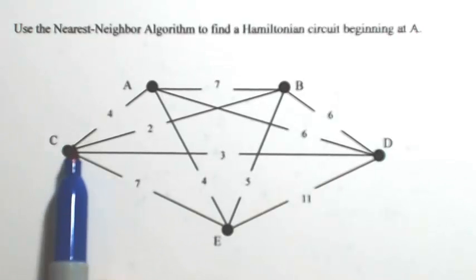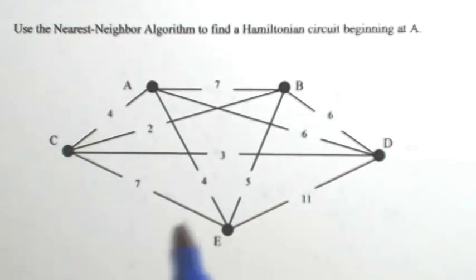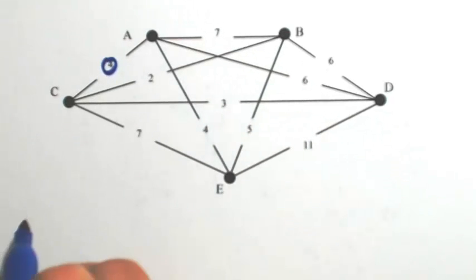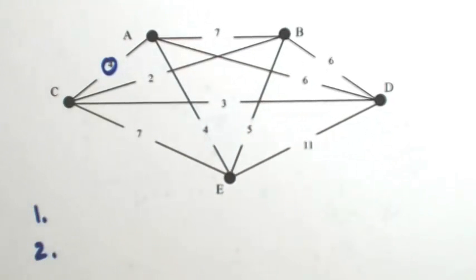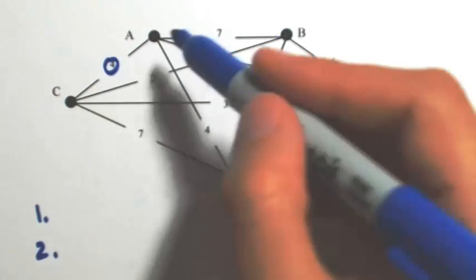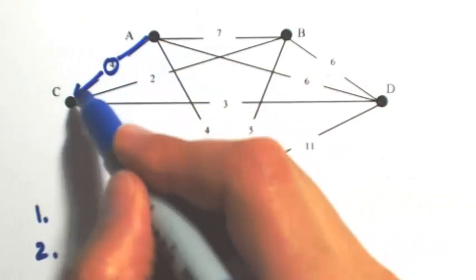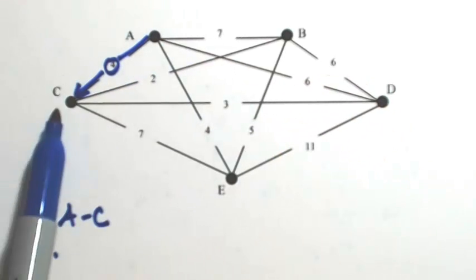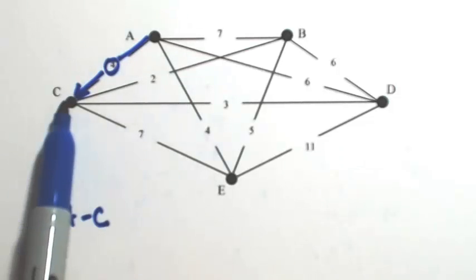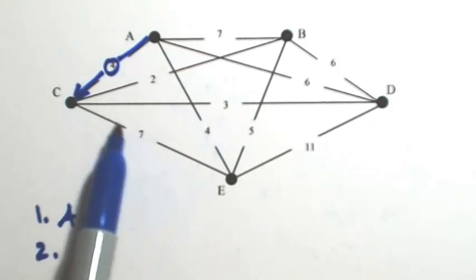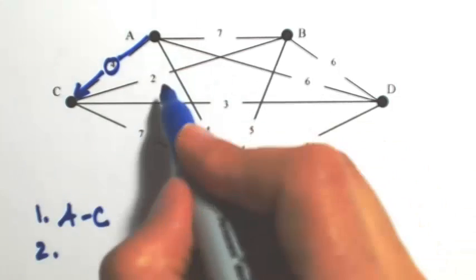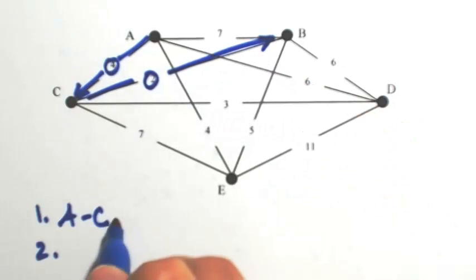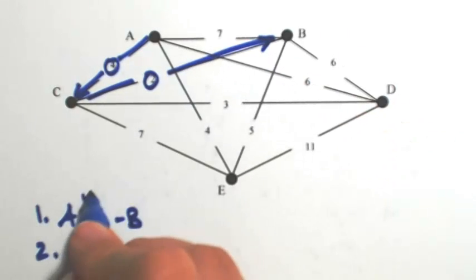For the first possibility, we go from A to C using the edge of cost 4. From C, the available edges are 2, 3, or 7, so 2 is the cheapest. That takes us to B. So far we have costs 4 and 2.